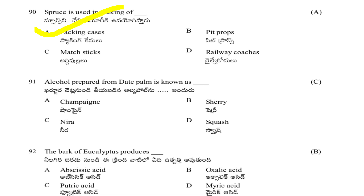Alcohol prepared from dead palm is known as: champagne, sherry, neera, or squash. The answer is C — neera.